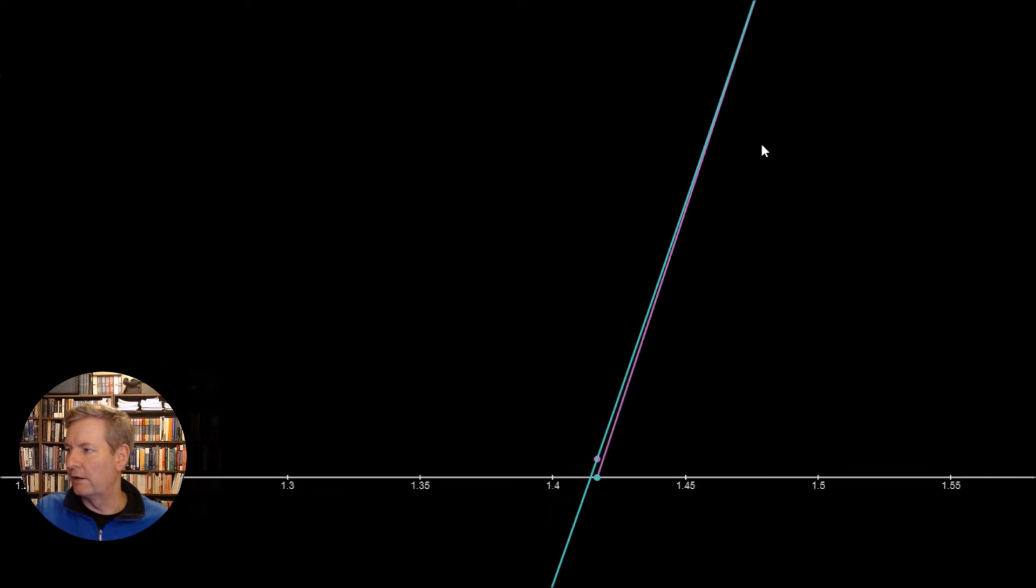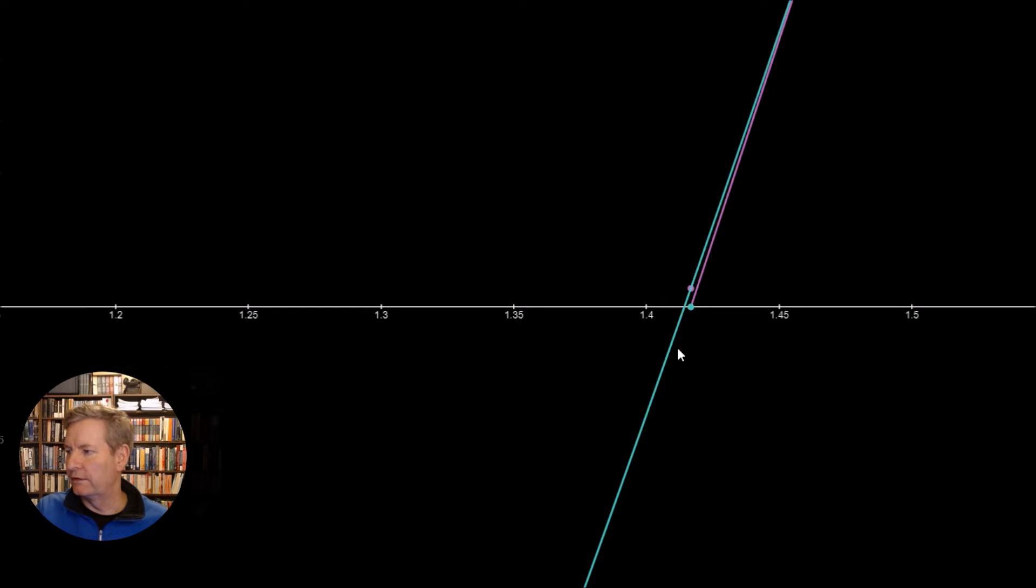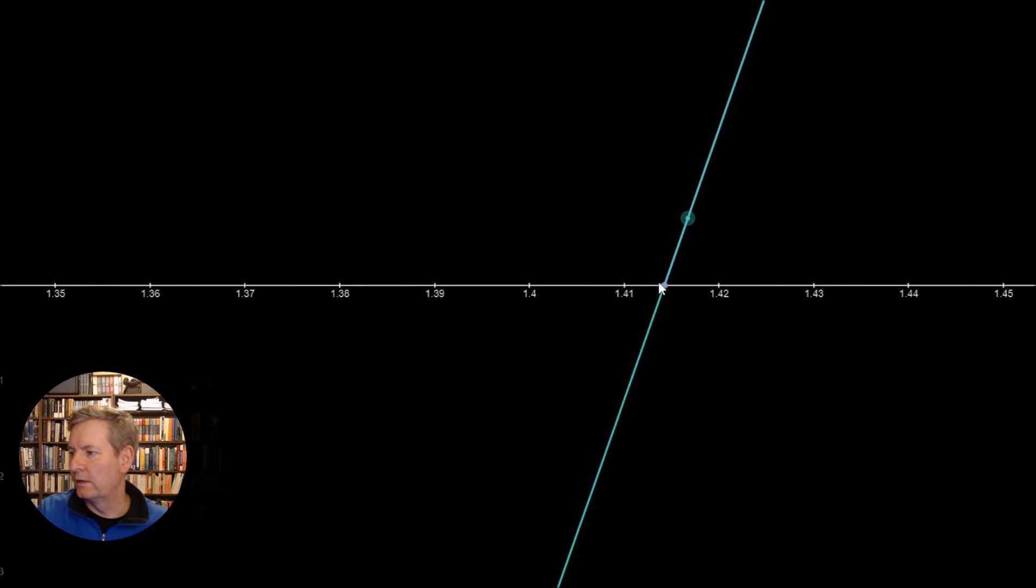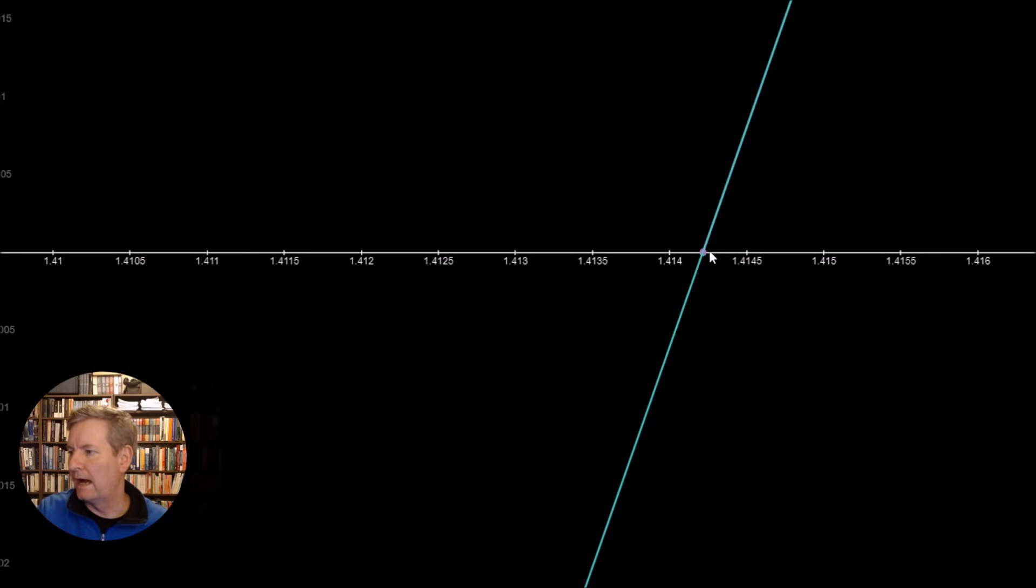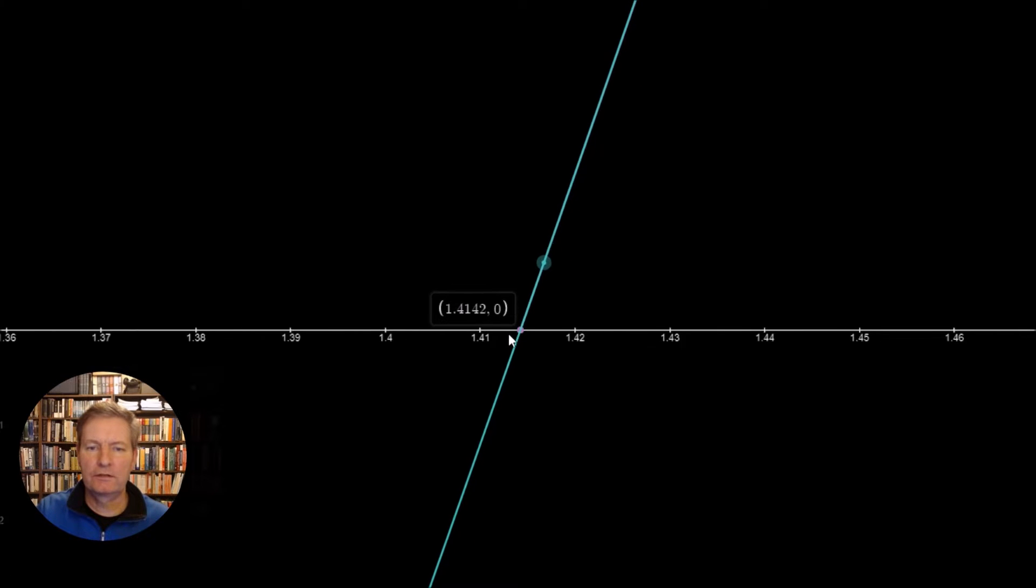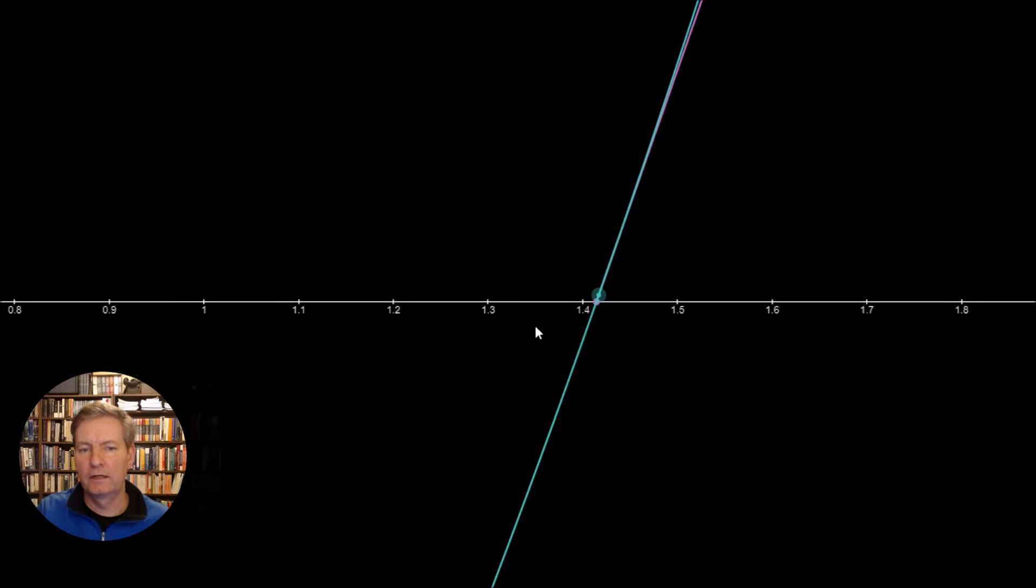We draw the tangent at that point and then we see where it crosses the x-axis and that's our new value for our input. In this instance here you can see it's at the point 1.4167. So already we're getting close after just a couple of iterations. So we continue doing this. I'll do this one more iteration. So the value is 1.4167. And you can see that we're getting closer and closer to the actual root which is 1.414.